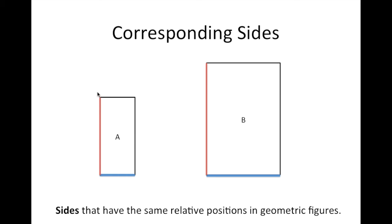Notice the red side in rectangle A would be the corresponding side to the red side in rectangle B because they're in the same relative position in two geometric figures. The blue line in rectangle A is also a corresponding side to the blue line in rectangle B because they are also in the same relative position in the two geometric figures.